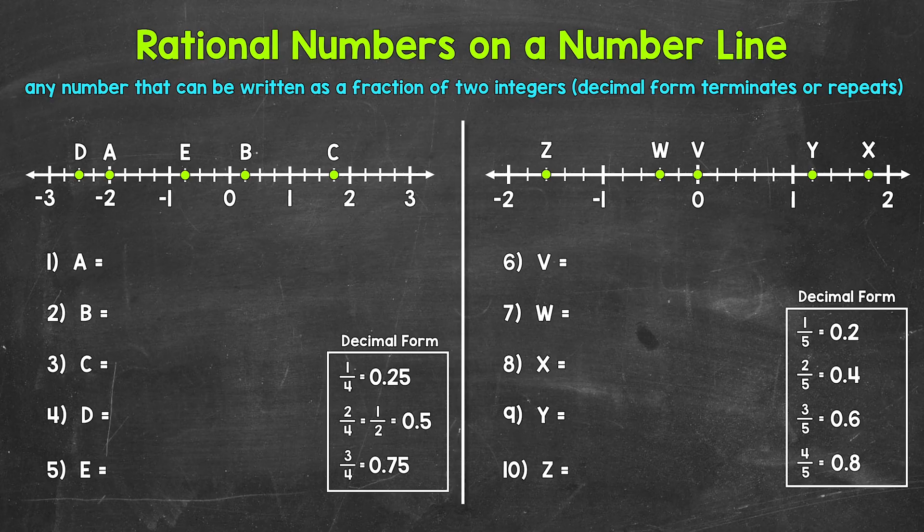Now remember, rational numbers are numbers that can be written as a fraction of two integers. The decimal form either terminates or repeats. If you need more help with what rational numbers are, I have a video covering this — that link is in the description.